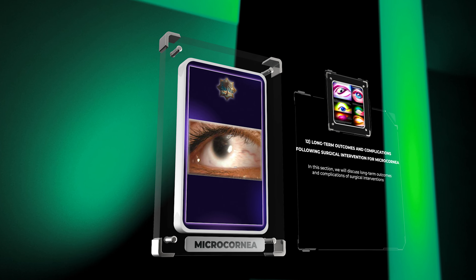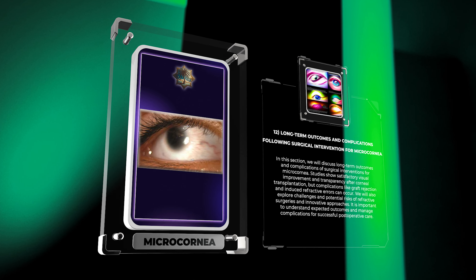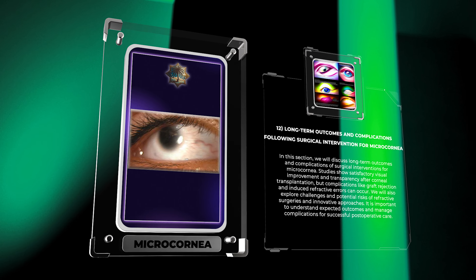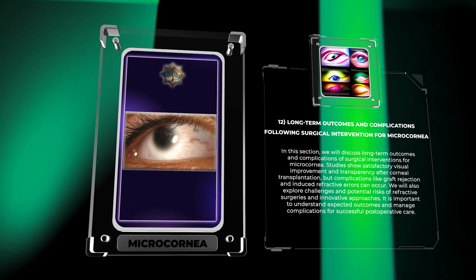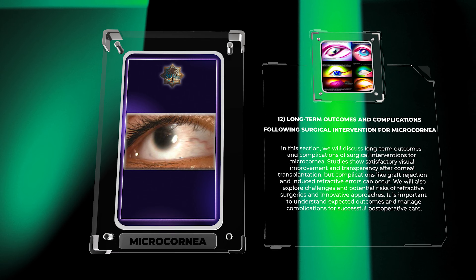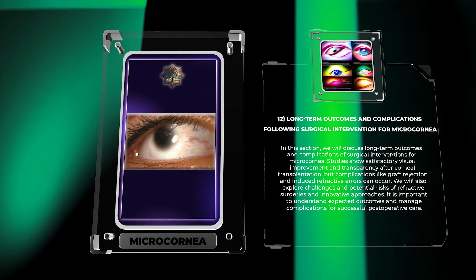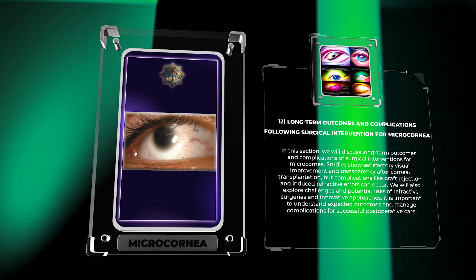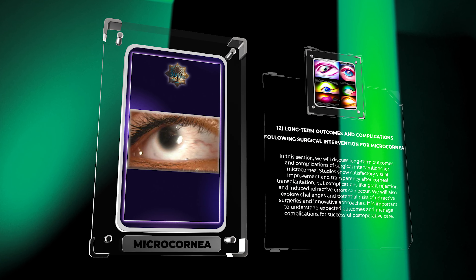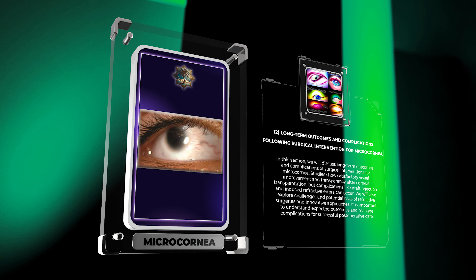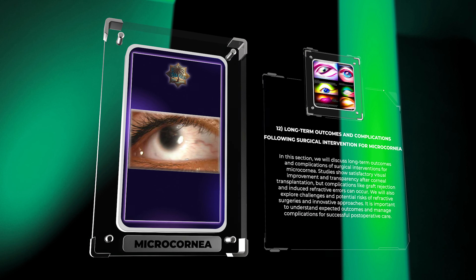Long-term outcomes and complications of surgical interventions for microcornea include satisfactory visual improvement and transparency after corneal transplantation, but complications like graft rejection and induced refractive errors can occur. Refractive surgeries and innovative approaches also carry challenges and potential risks. It is important to understand expected outcomes and manage complications for successful postoperative care.